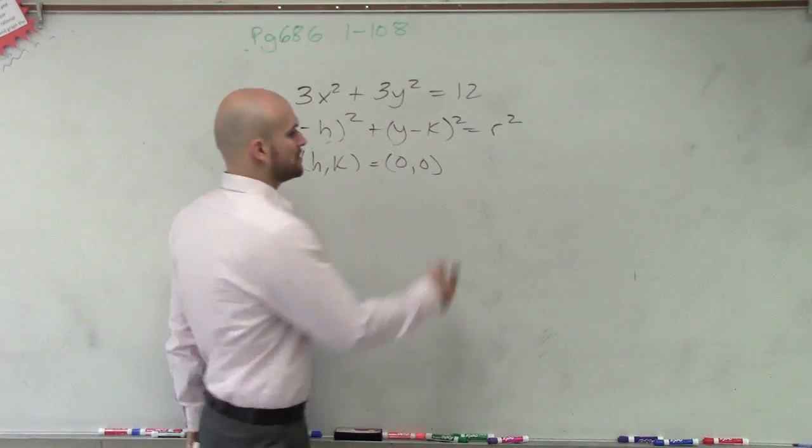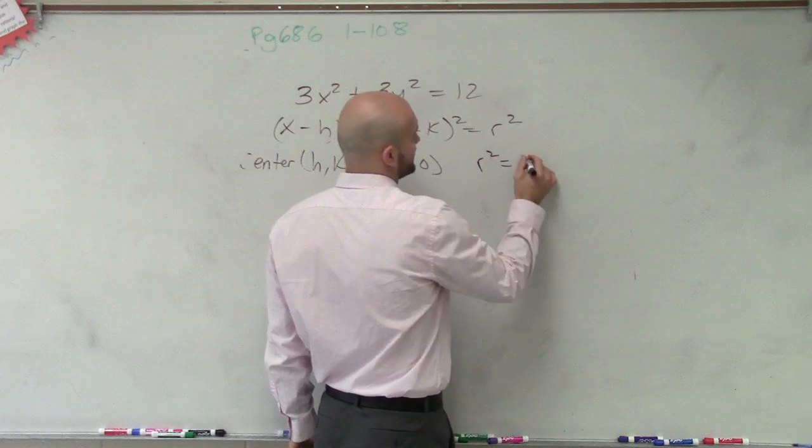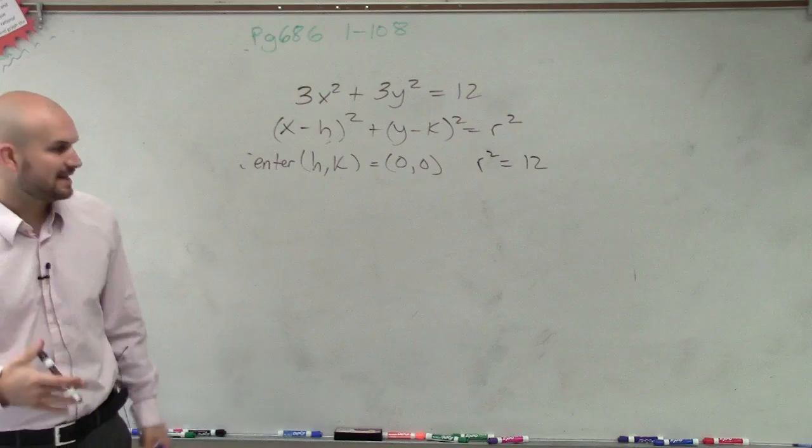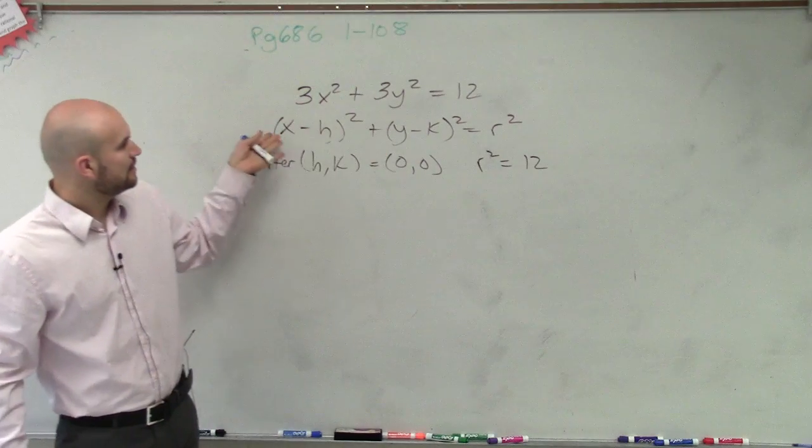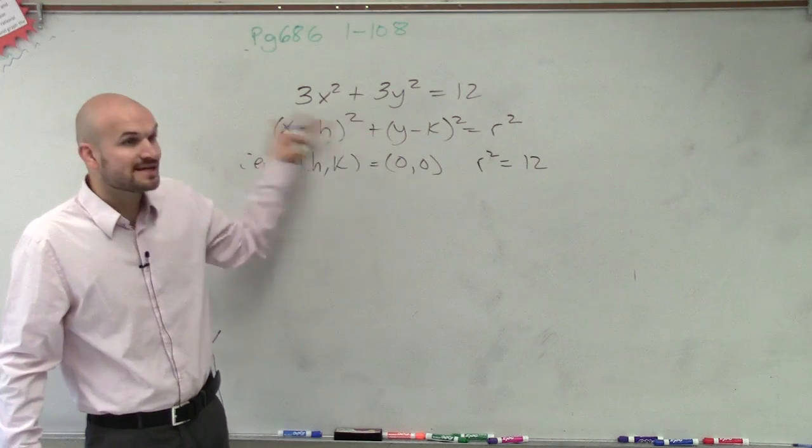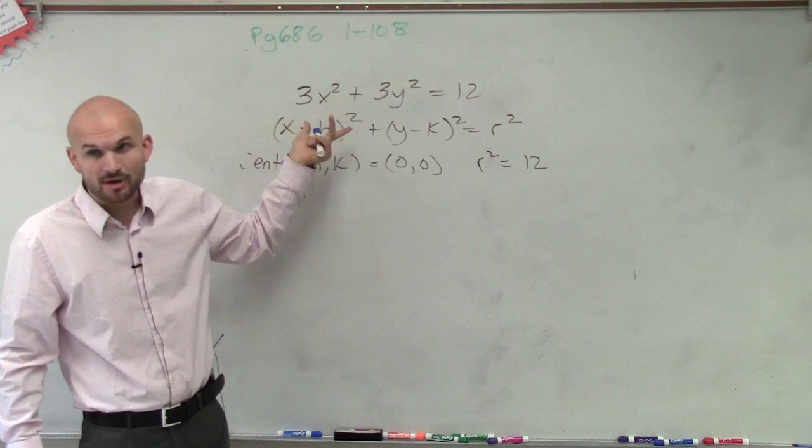Our r squared gets a little troublesome, though, because when you look at r squared, we're having 12. But that's only the case when we're looking at that when we just have our x and our y's, right? Our x and our y's here, they're not being multiplied by any number, are they?